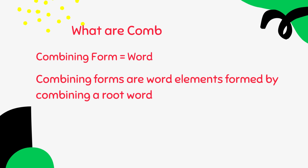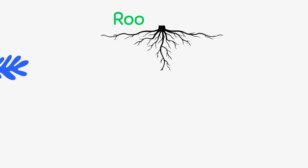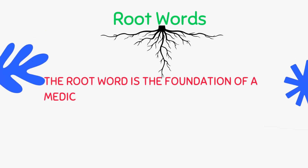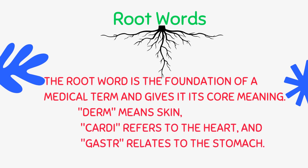What are combining forms? Combining forms are word elements formed by combining a root word with a combining vowel, typically O or I. These forms make medical terms more concise and easier to understand. The root word is the foundation of a medical term and gives it its core meaning.